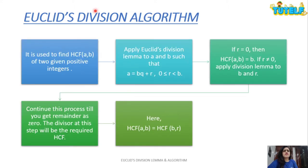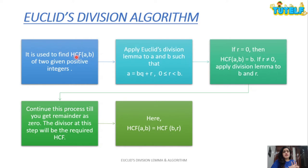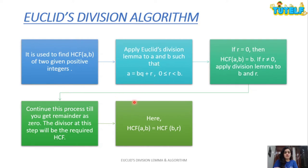Next is Euclid's division algorithm. We'll apply Euclid's division lemma to find the HCF of two positive integers a and b, written as HCF(a, b). You will apply Euclid's division lemma to a and b until the step where you get remainder 0.